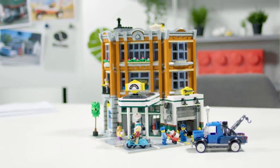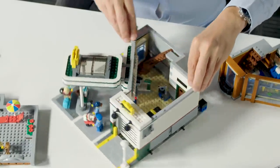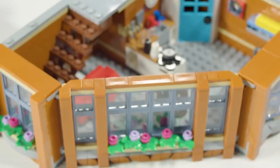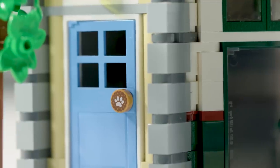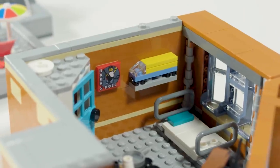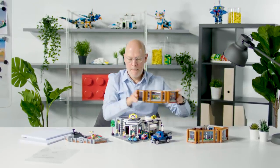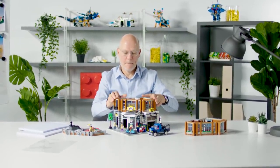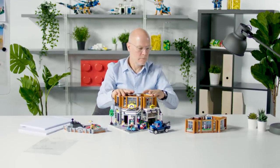The Corner Garage is a building with three stories. In the bottom you have a garage, and then in the second you have a vet, and then on the top you have a young dude living in the flat. As usual with the modular buildings, you can detach every floor from each other and move them around.